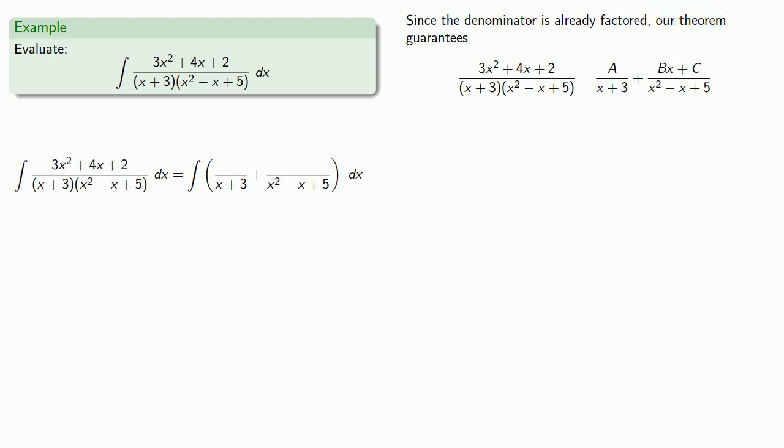Now since everybody loves working with fractions, we'll go ahead and find a common denominator and add... wait... wrong script. What I meant is that we really don't want to work with the fractions, so let's multiply through by that common denominator, (x + 3)(x² - x + 5).